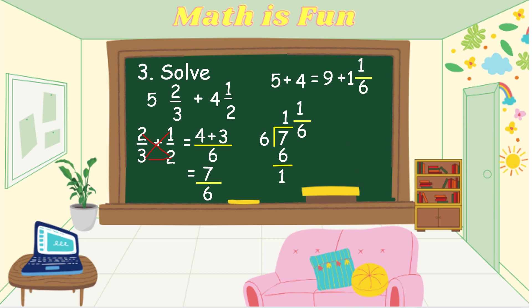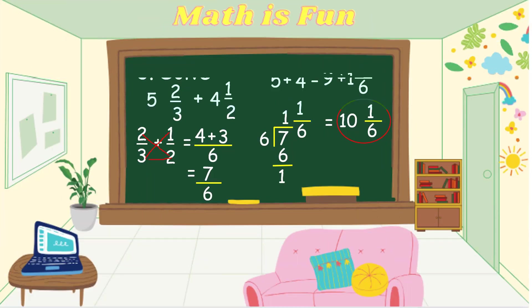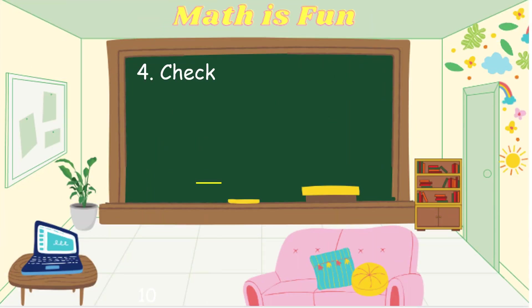When adding a whole number to a mixed number, we add the whole numbers: 9 plus 1 equals 10, and copy the fraction 1 over 6. So our final answer is 10 and 1 sixth.